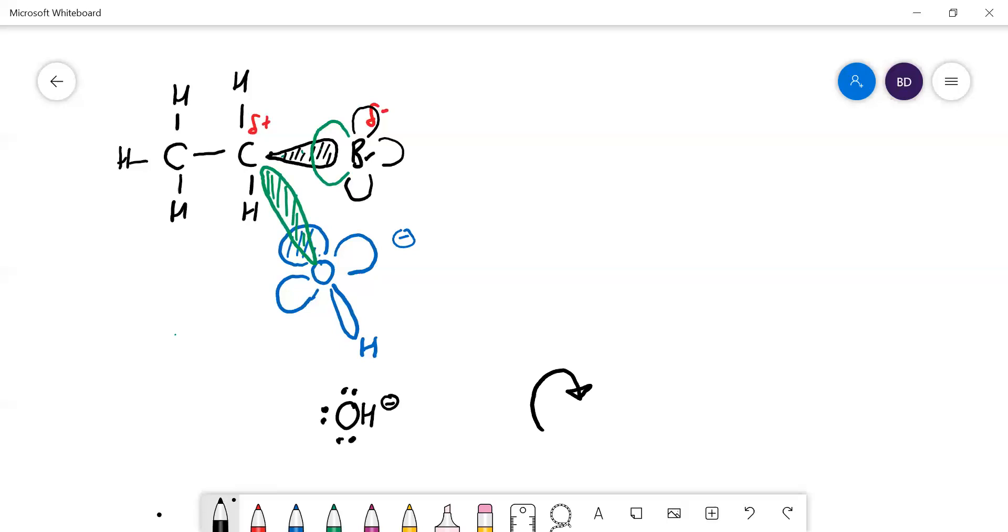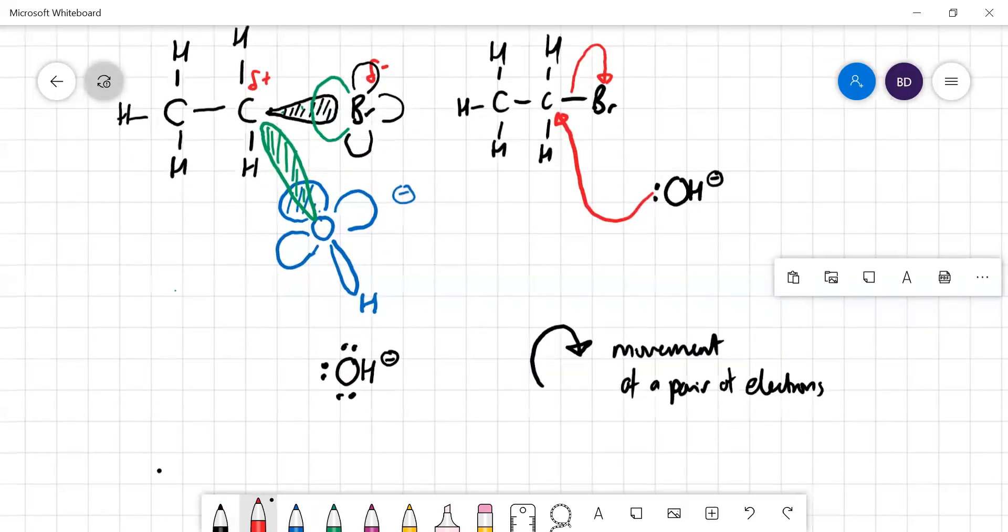People have come up with a way of representing that using these curly arrows. A curly arrow means it's showing the movement of a pair of electrons. I'll show you how you draw this using curly arrow notation. You've got your bromine and your hydroxide ion comes along. You don't have to draw all three lone pairs, just draw one - the one that's going to react. Here's this curly arrow. That pair of electrons is going to go onto that carbon. The electrons in this bond are going to both shrink back and go onto the bromine.